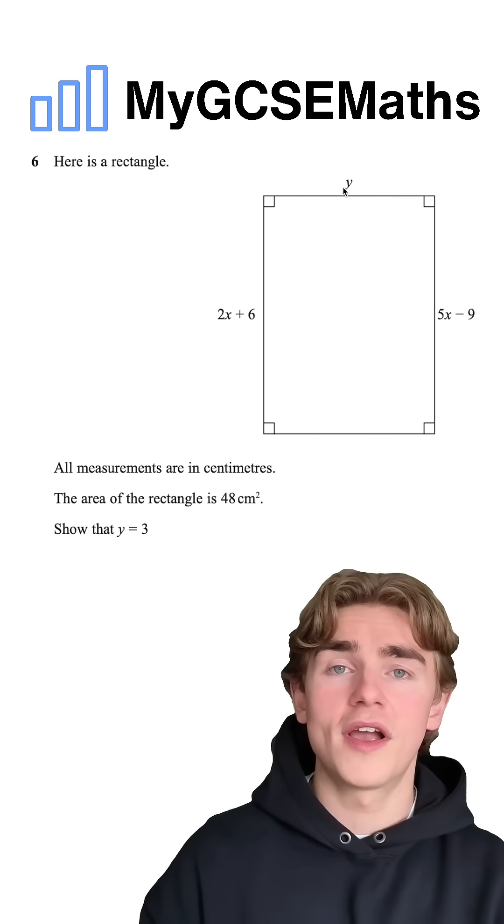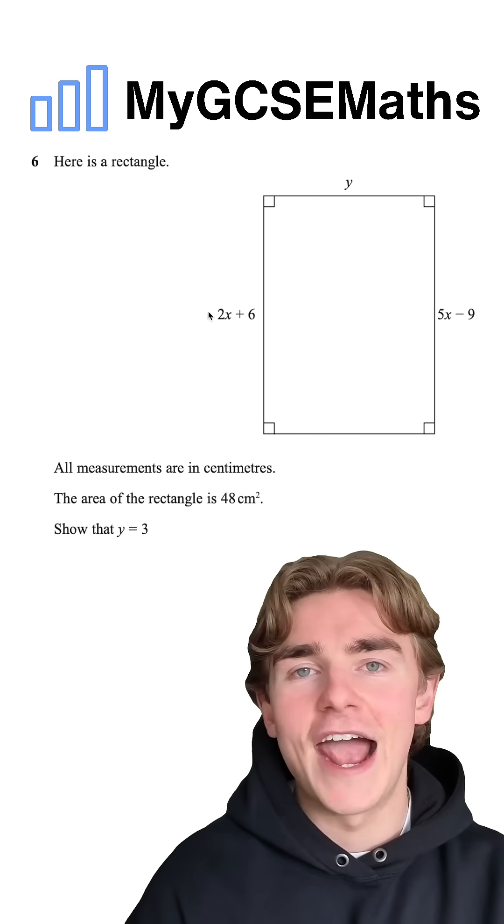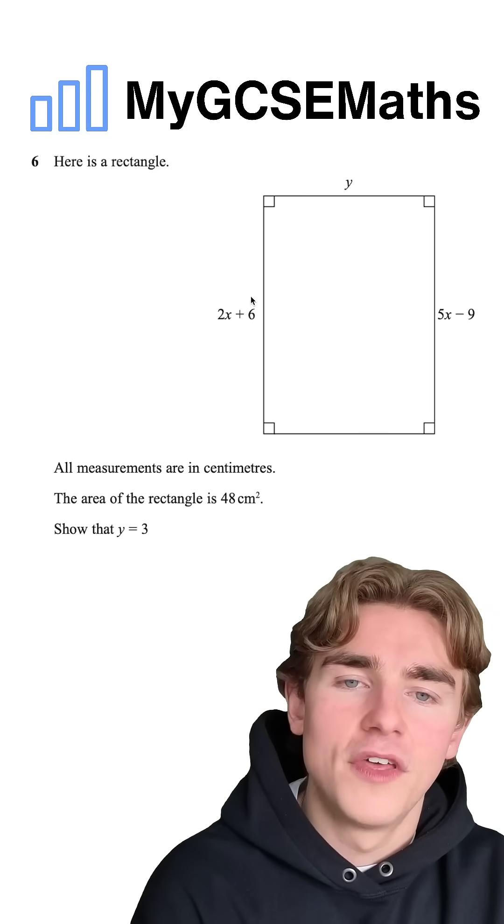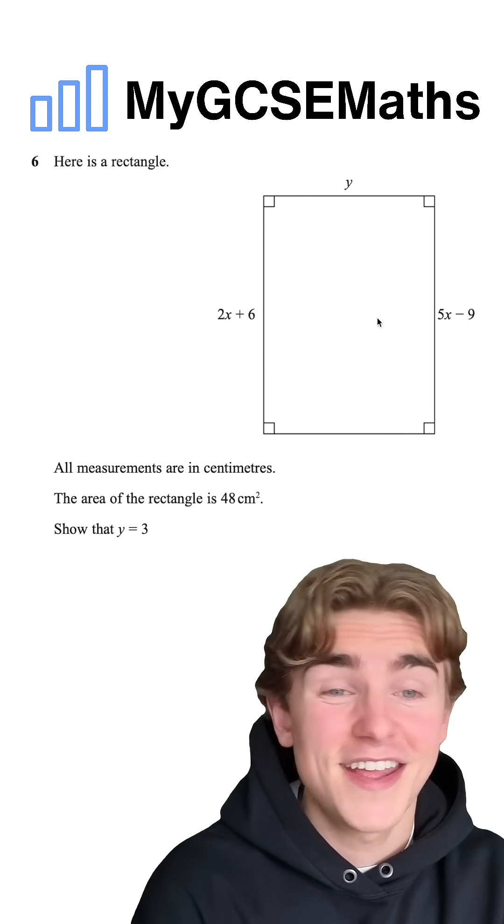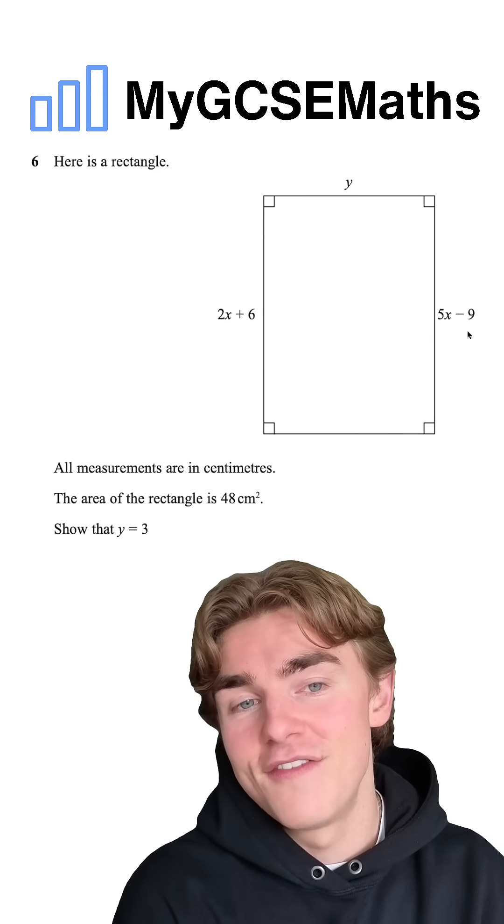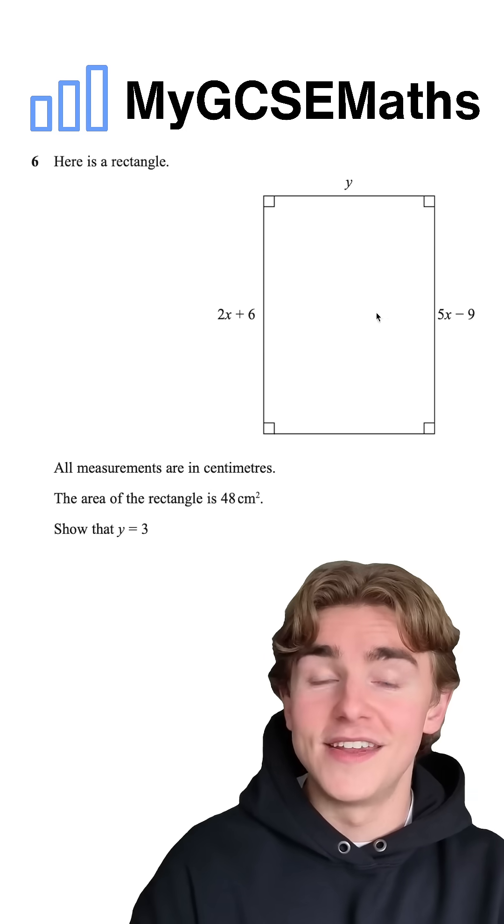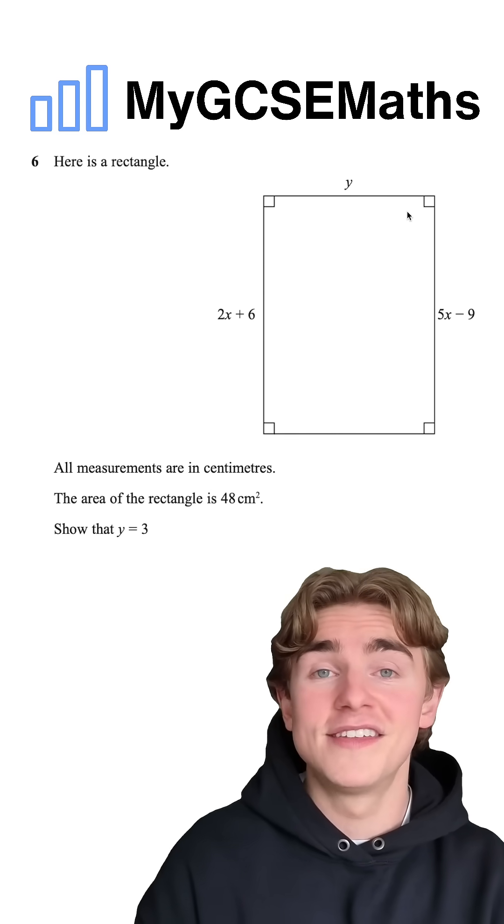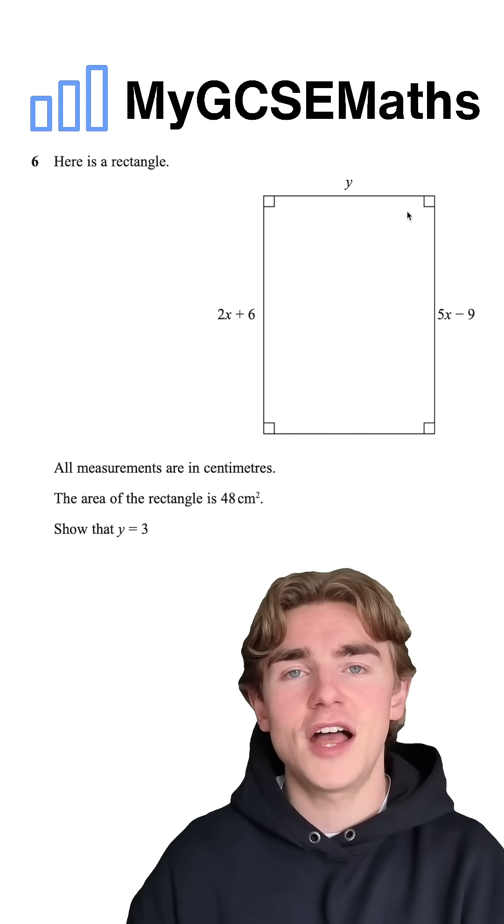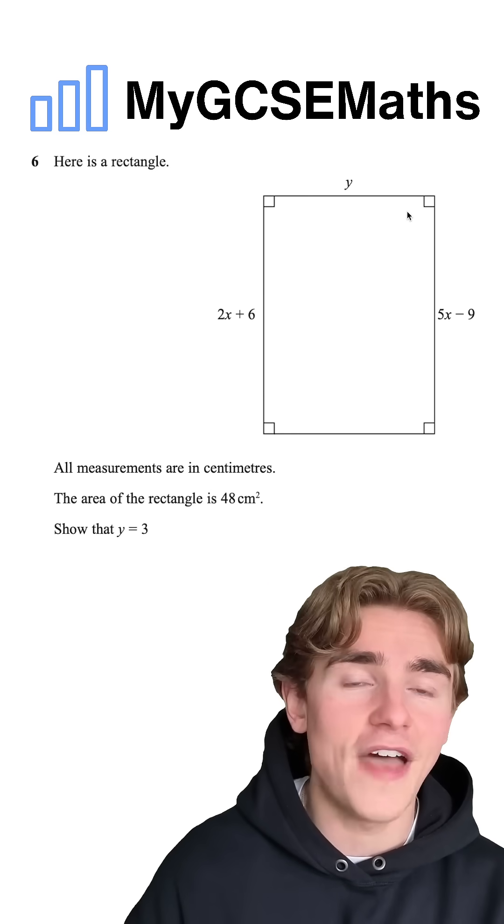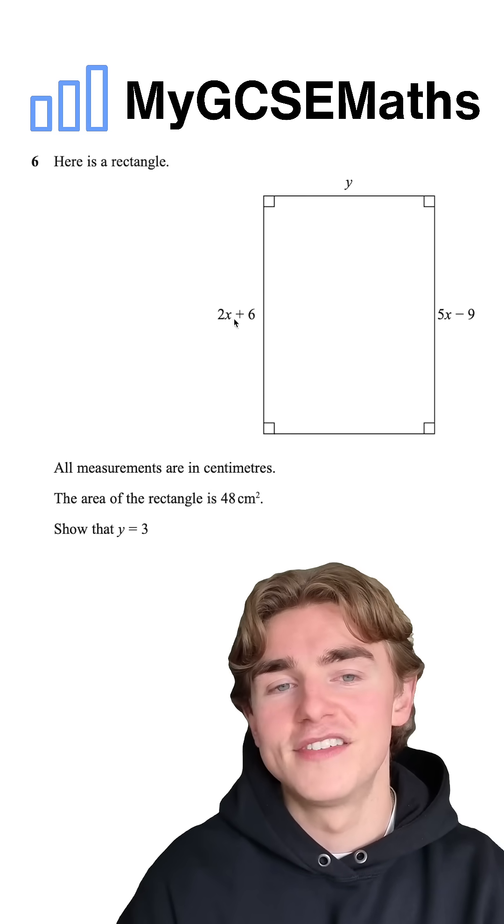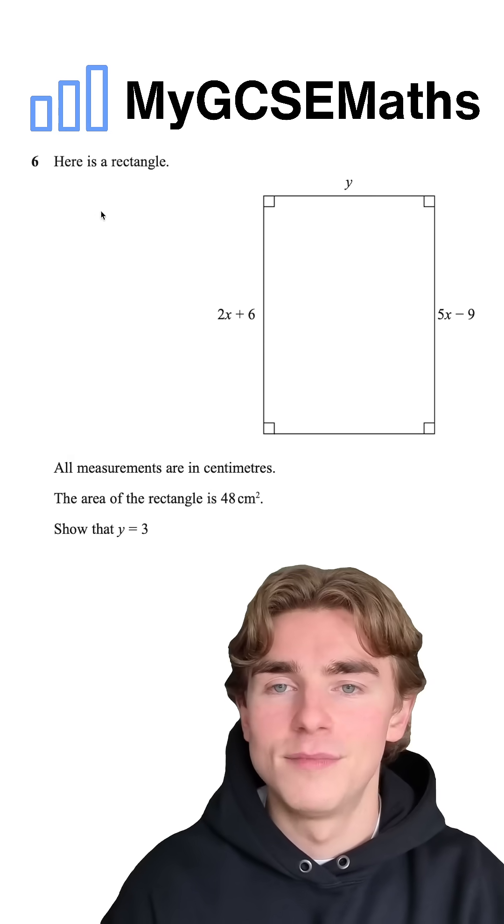The first thing we need to do is work out the value of that height. How are we going to do it? We've been told that the left-hand side is 2x + 6 and the right-hand side is 5x - 9. They're both equal to the height, which means they have to be equal to each other. So we can find the value of x which makes 2x + 6 equal to 5x - 9.